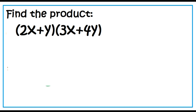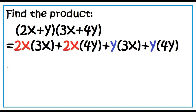Find the product of the quantity 2x plus y and the quantity 3x plus 4y. First: 2x times 3x. Outer: 2x times 4y.